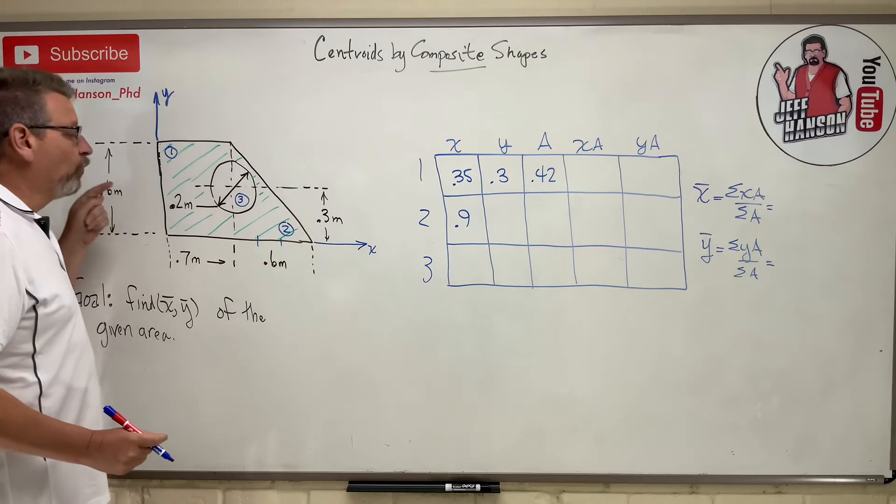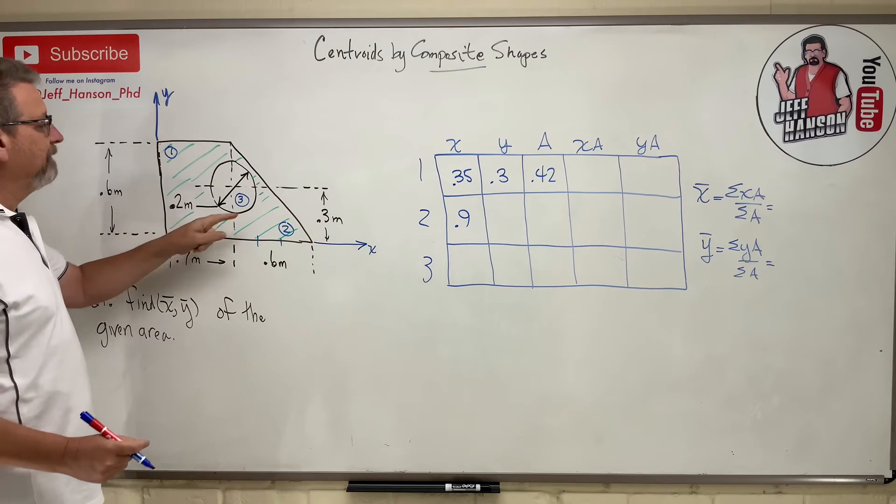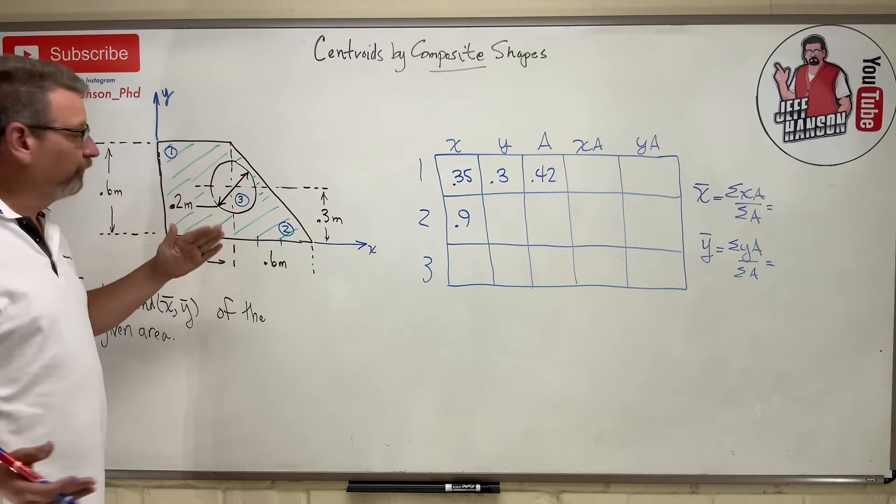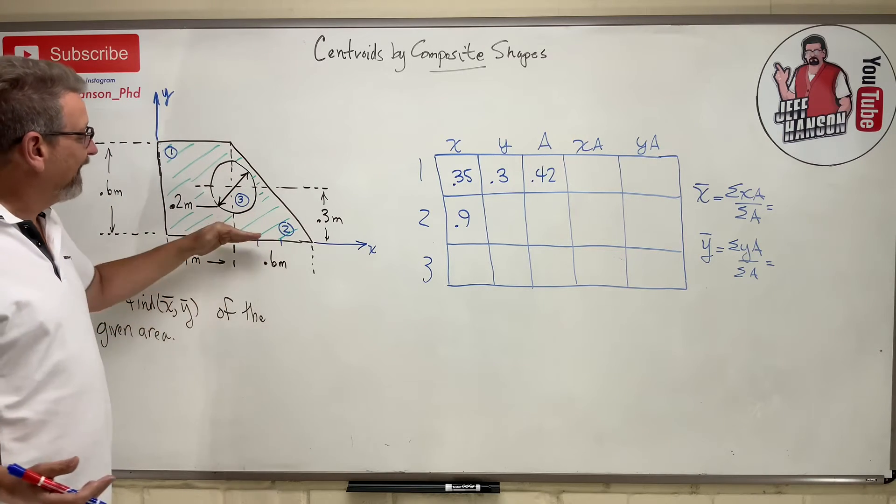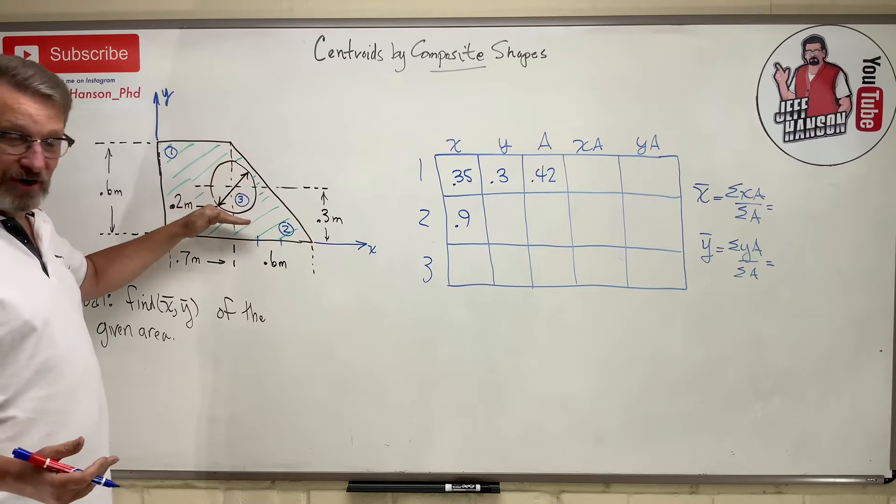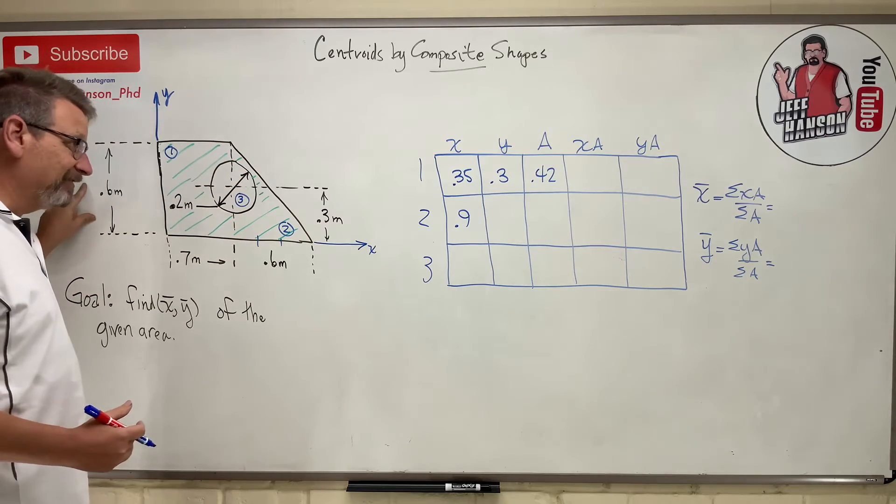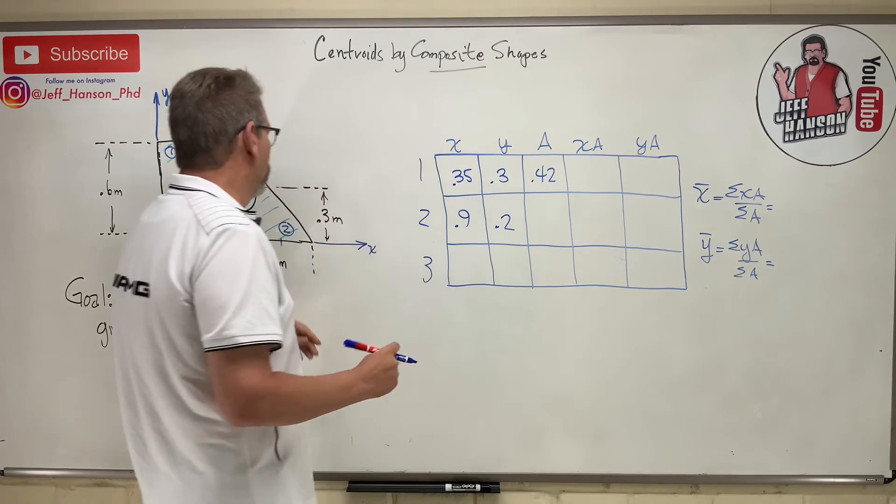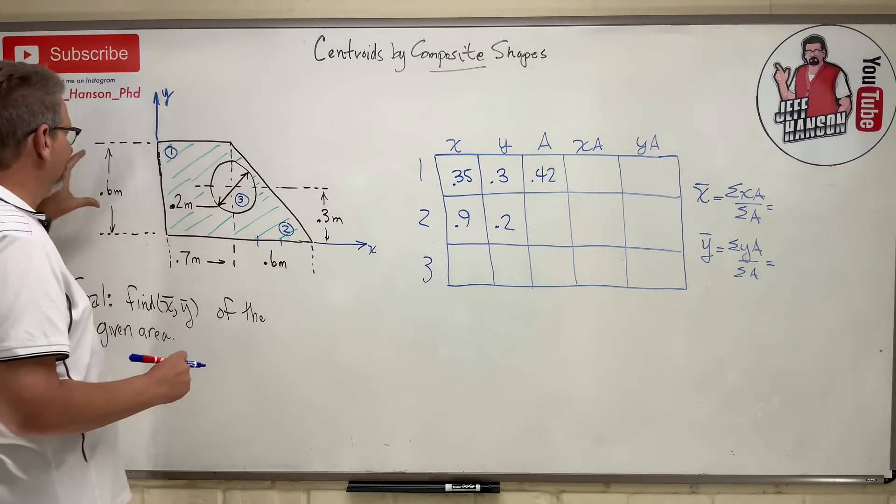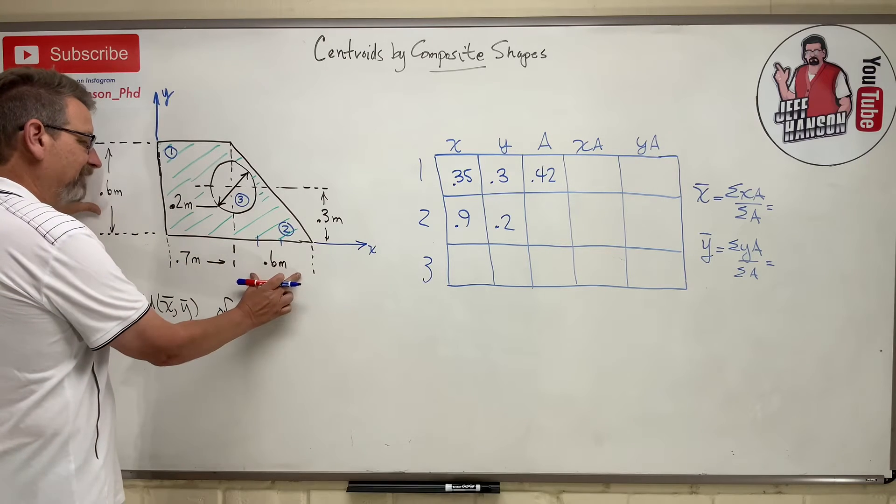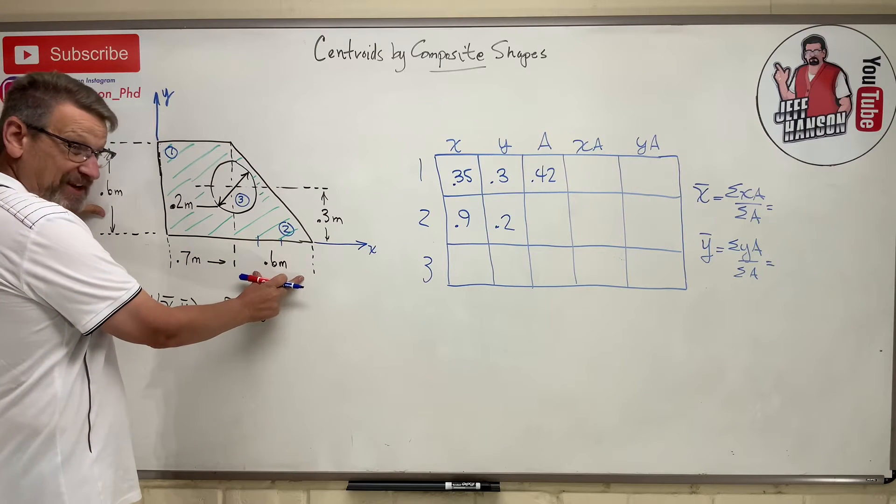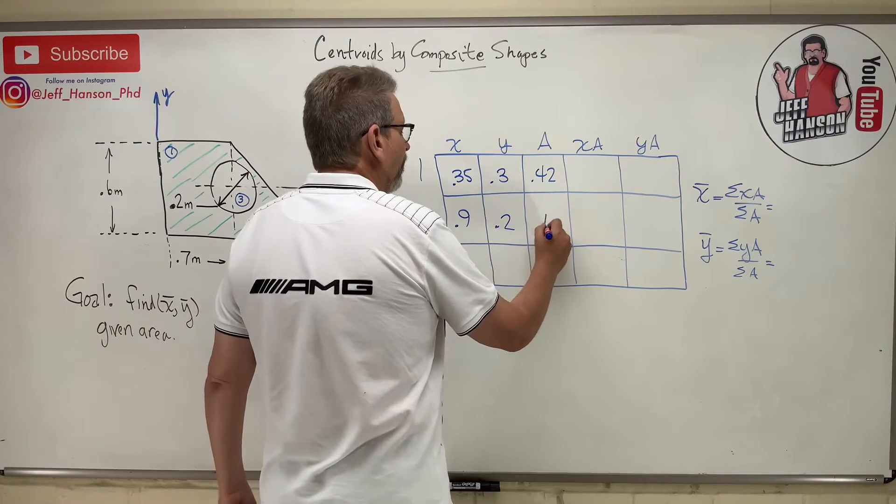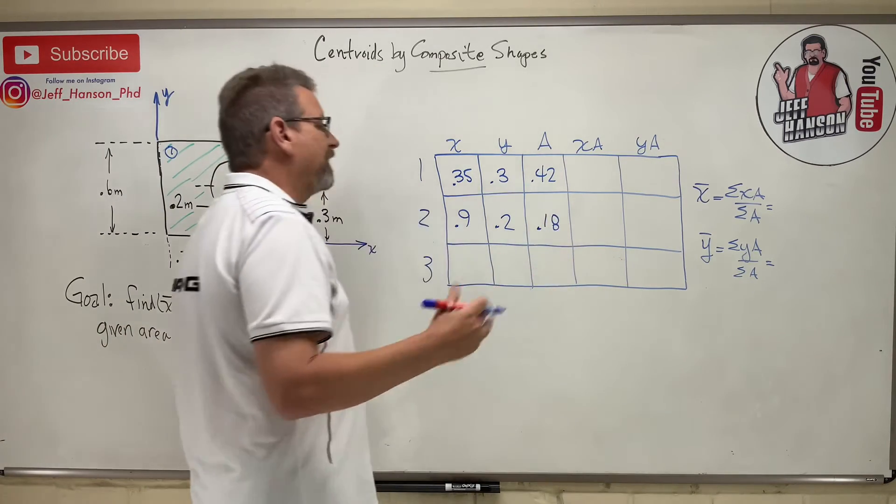So what is Y bar for shape two? Right triangles - like the base is a third of the base, the height is a third of the height. So the height is 0.6, so a third of that is 0.2. And then what do we have? One half base times height. The base is 0.6, the height is 0.6, both of them, so that's 0.36 divided by 2 - 0.18.